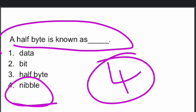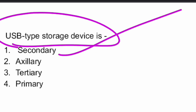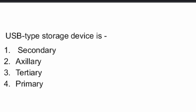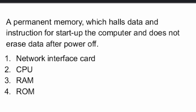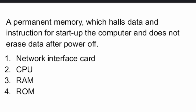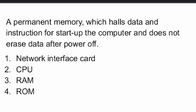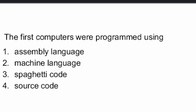USB type storage is a secondary storage — option one is the right answer. A permanent memory which holds data and instructions for setting up the computer and does not erase data after power off — this is Read Only Memory (ROM), option D, the right answer.